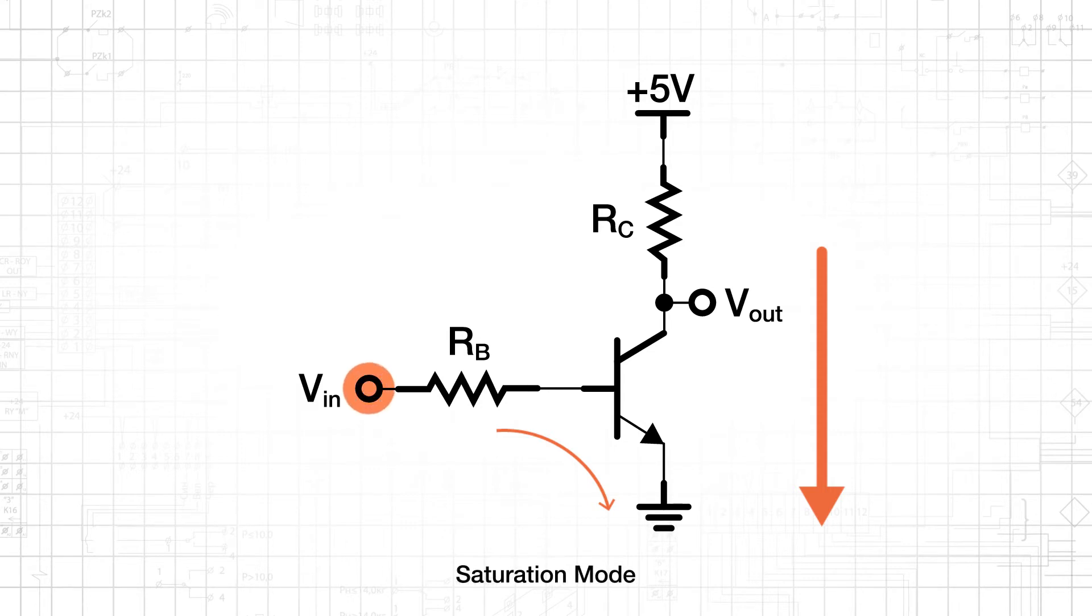As Vin increases, base current and collector current increase as well. Eventually, the collector resistor RC will drop so much voltage that the BC junction will be forward biased.